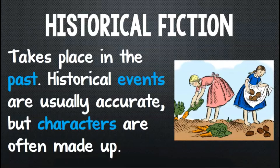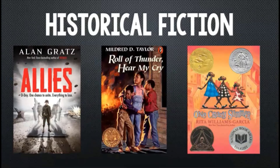The second subgenre of fiction we'll talk about is historical fiction, which takes place in the past. Historical events are usually accurate, but characters are often made up. Here are three novels that are classified as historical fiction. The first novel, Allies, takes place on D-Day during World War II. The story is told from multiple characters' points of view, each of which play an important role in the fight to bring down Hitler and the Axis powers.